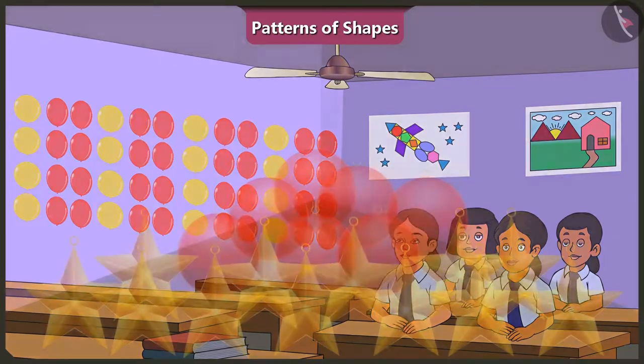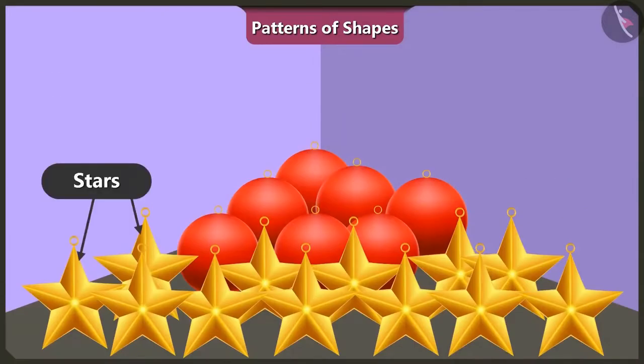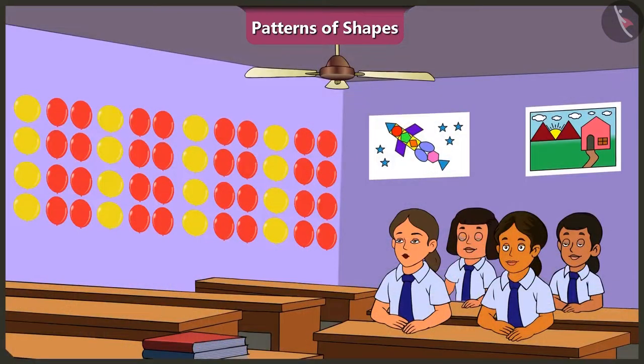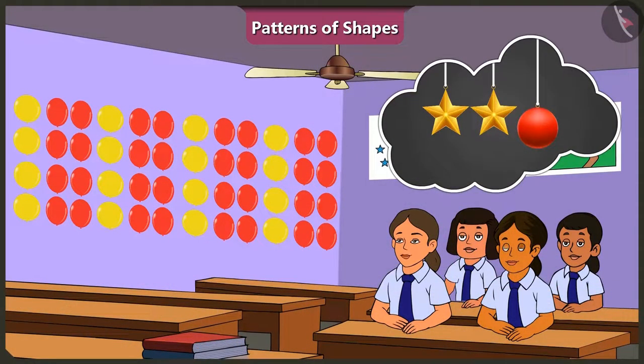Vinny, look over there. I can see some decoration materials in the shape of stars and spheres. We can make a toran out of these two shapes to decorate the door. Oh, yes. We can make a fantastic pattern with these. How? Oh, we can put a sphere after every two stars and we can create a beautiful toran by repeating this pattern. Wow. We will make a great toran.